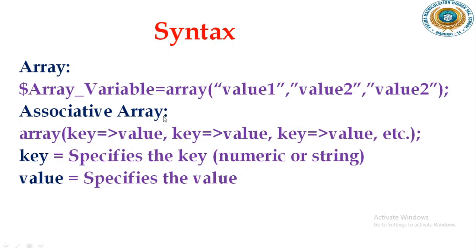The second type is associative array. In an associative array we are going to declare key-value pairs. The array keys are called as Arun, Balu, Chandra - but the key is how we are going to refer a value. For example, key 12101, 12102, 12103 - this is called a key value that we are going to use to identify the set of values.